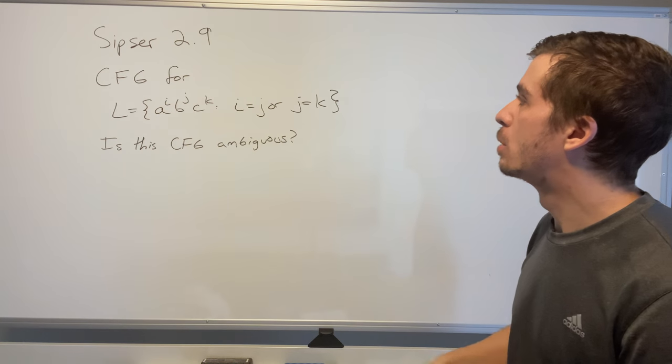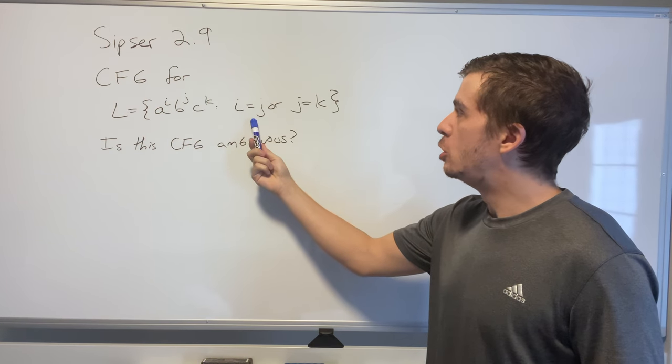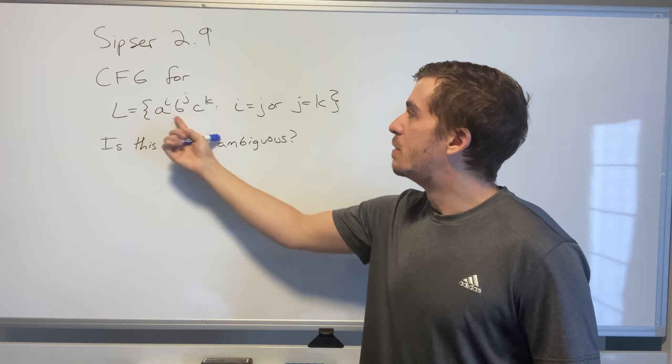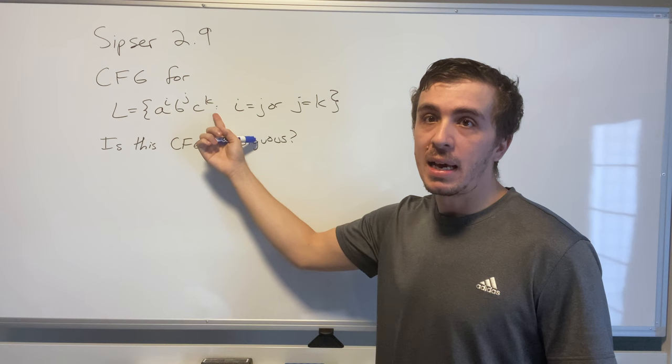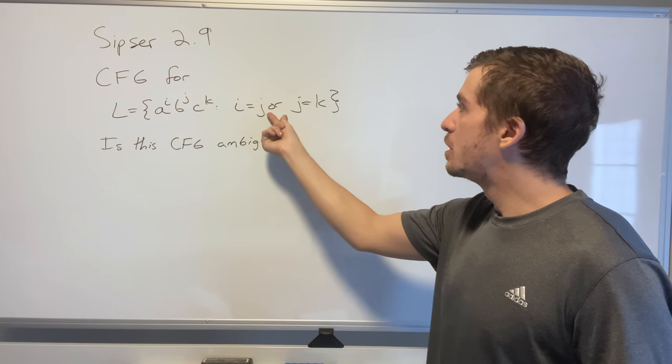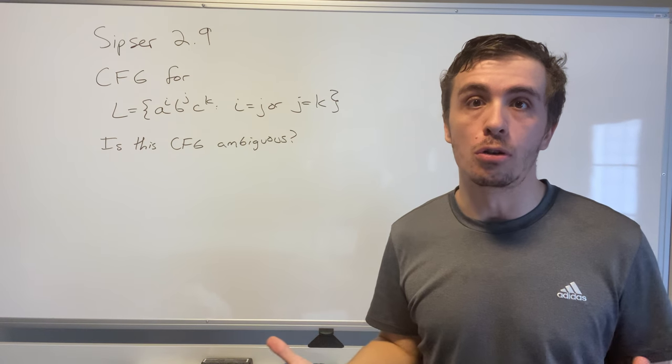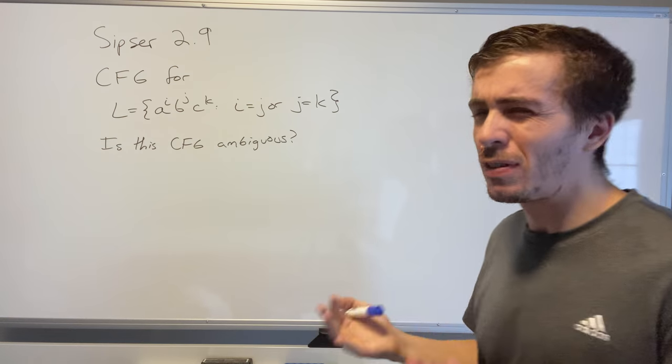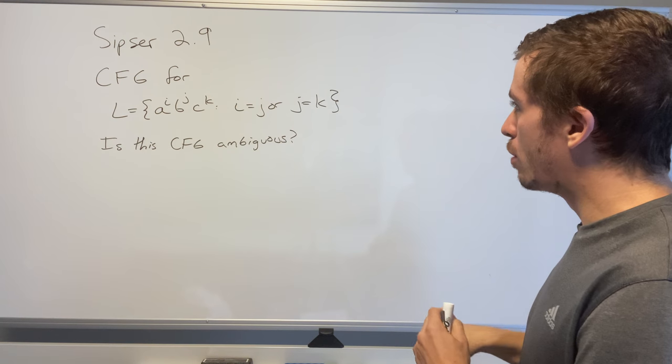So what is the context-free grammar for this? Well, we got i equal to j or j equal to k for the string with i copies of a, j copies of b, and k copies of c. Whenever you see the word "or", we can use closure under union for context-free grammars.